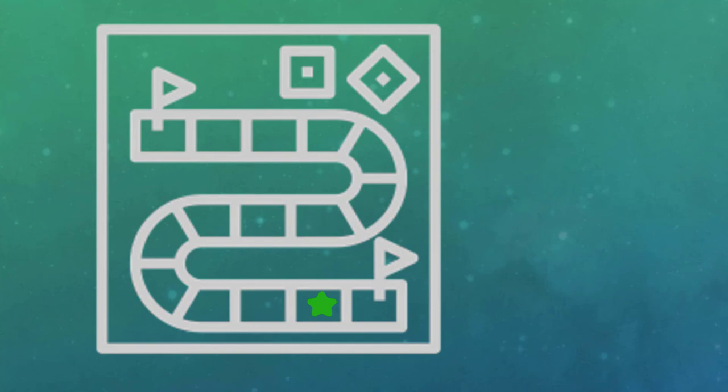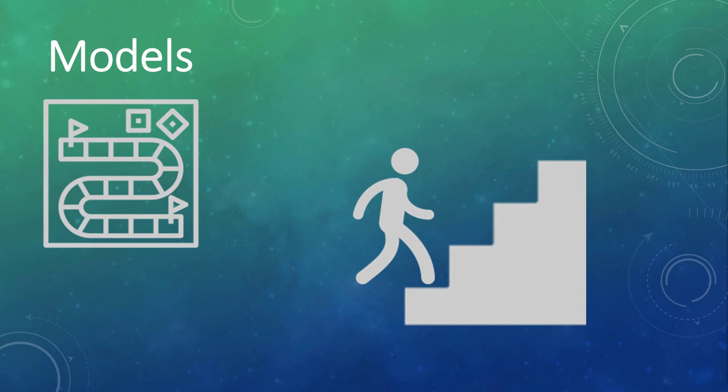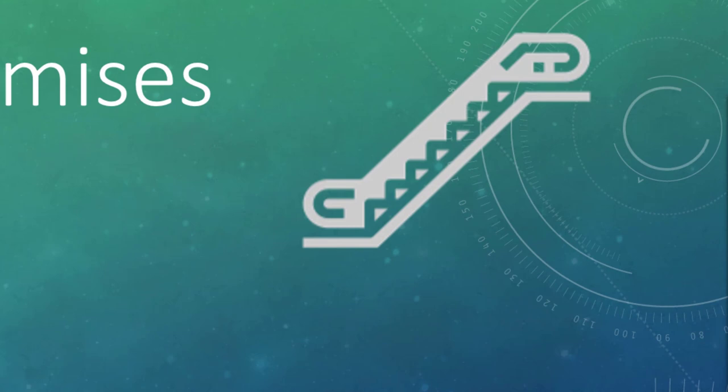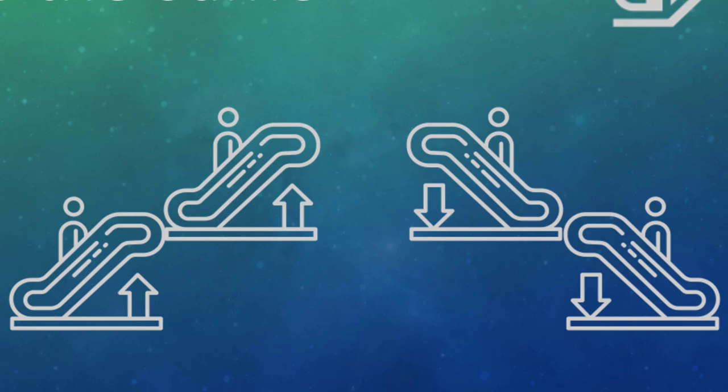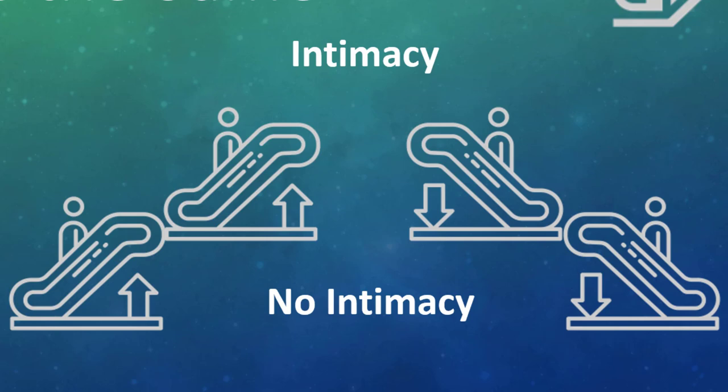All of these models are designed to show that relationships go through various stages. For example, you need to go through a meeting stage before you can move on to another stage, say, spending time together. Using Knapp's staircase metaphor, you need to put your foot on the first step before you can step up to the next. For our metaphor, let's use escalators—those moving stairs that go up and down to bring you to different floors in a building. In a relationship, the top floor would be the greatest intimacy, with the bottom floor being your way out of the building—ending the relationship.